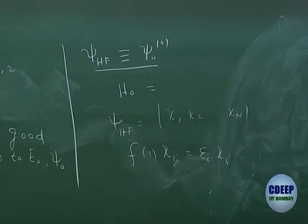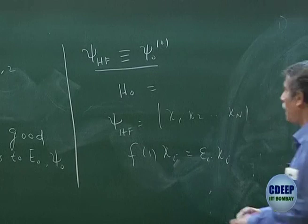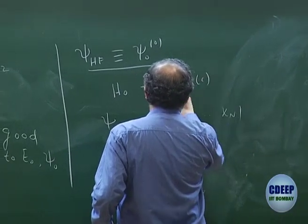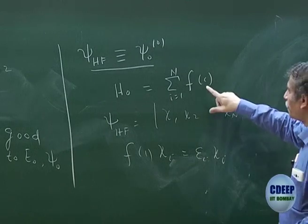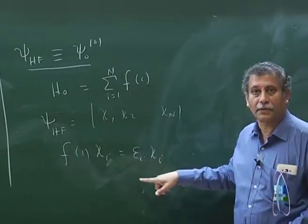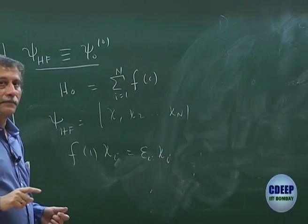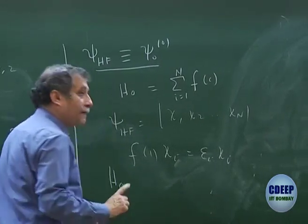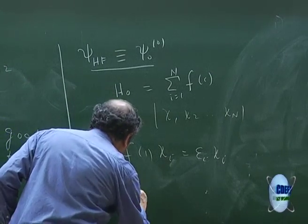Can you tell me the operator H₀ whose eigenfunction will be ψ_HF? It is a very simple question — it is the sum of the Fock operators. Because the sum of Fock operators has eigenfunctions χᵢ, and ψ_HF is a product of those. So the Hartree-Fock wave function will be an eigenfunction of H₀.